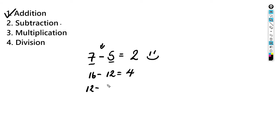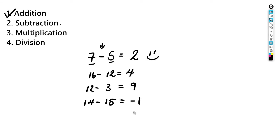Let's do some more. Sixteen minus twelve should be equal to four. Twelve minus three should be equal to nine. And let's say we have fourteen minus fifteen — this is a little different. What's the difference? We should get negative one.